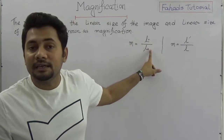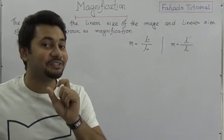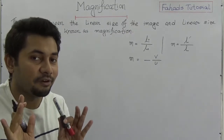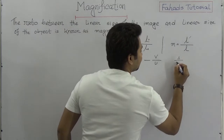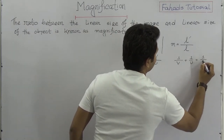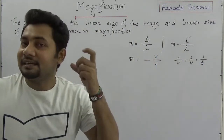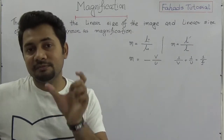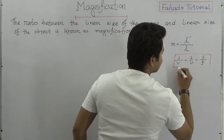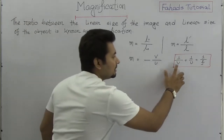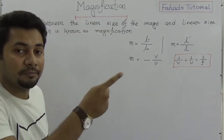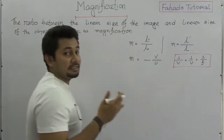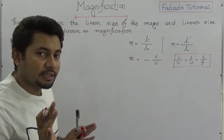Another equation we can use is M = -V/U. You should know the mirror equation: 1/V + 1/U = 1/F. Here V is the distance of the image from the pole of the mirror, U is the distance of the object, and F is the focal length.